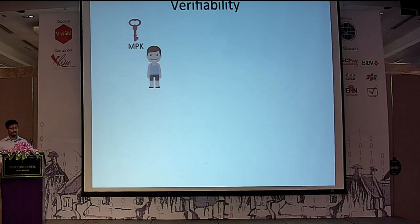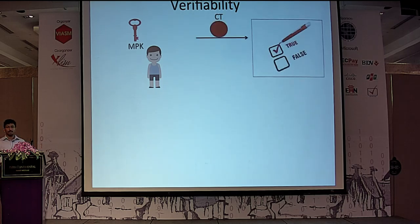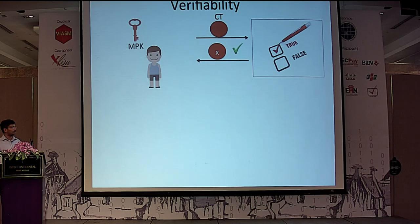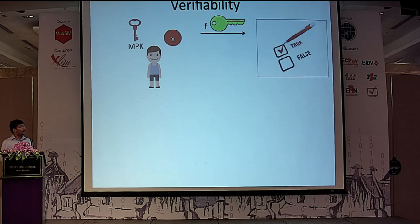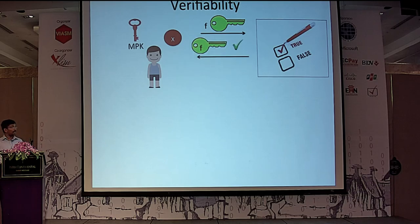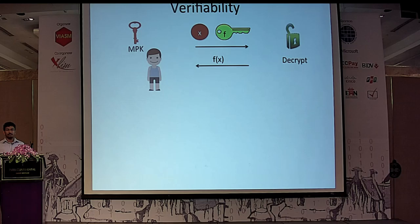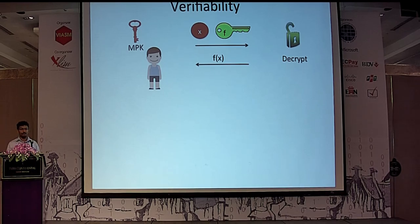In this work we propose the notion of verifiability. Suppose there is some user with the master public key and a ciphertext; he can run a publicly verifiable algorithm on this ciphertext and learn whether the ciphertext was correctly generated — meaning that some message was used to run the actual encryption algorithm to produce it. This public verification algorithm does not reveal the message inside the ciphertext, so there is no security loss. Similarly, he can run another public verifiable algorithm on a received function secret key to check whether it was generated correctly. With a well-formed ciphertext and function secret key, decryption is guaranteed to yield f(x).